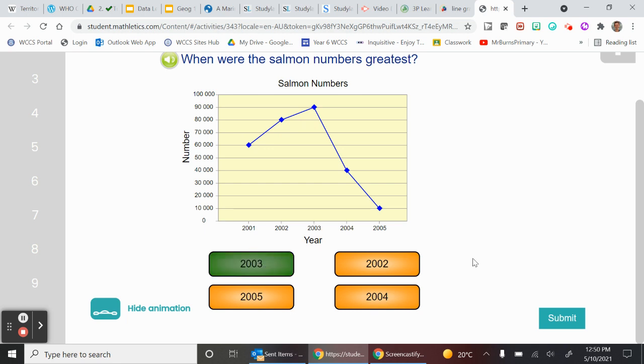So let's click that, click and go to submit. Yeah, let's do another one. Let's go to next. Look, we got it right, we're champs. What was the salmon population in 2001?